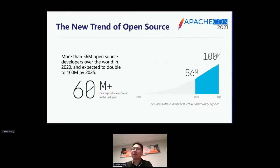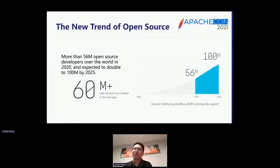Another thing we can observe is that there are also a great number of new open source projects emerging. From the report, over 60 million new repositories were created last year — a very large number. From observations of open source projects and contributors, we can see a clear trend that open source will continue to grow rapidly in the future. The contributor number is expected to double to 100 million by the year 2025.